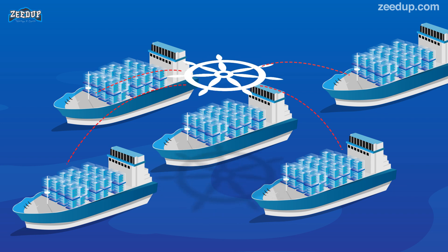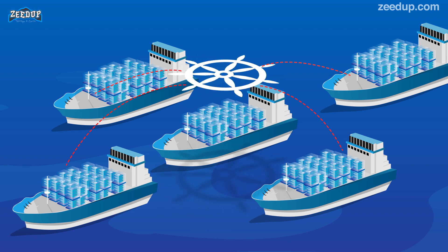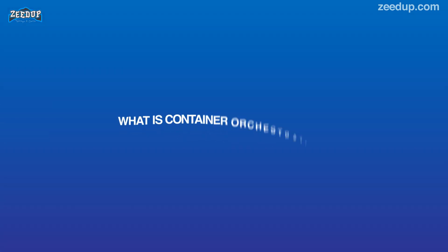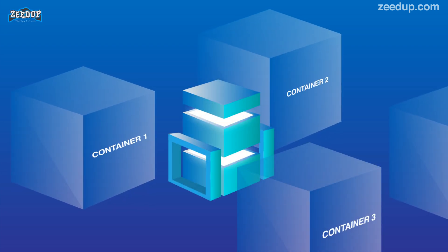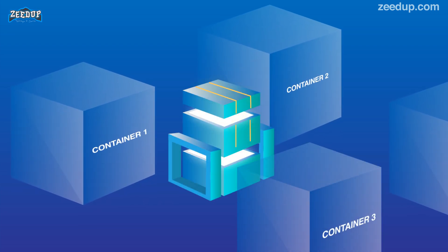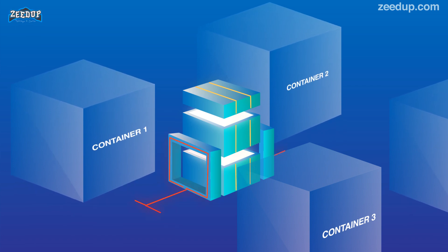Kubernetes provides a platform for automating deployment, scaling, and operations of application containers across clusters of hosts. Above all, this lowers the cost of cloud computing expenses and simplifies operations and architecture. Container orchestration is the automatic process of managing or scheduling the work of individual containers for applications based on microservices within multiple clusters.